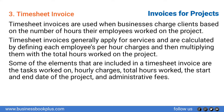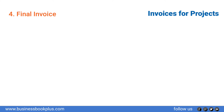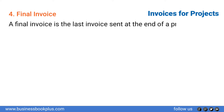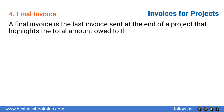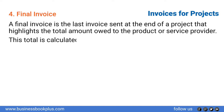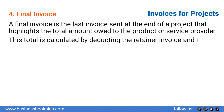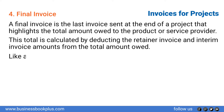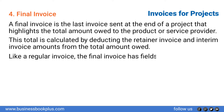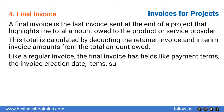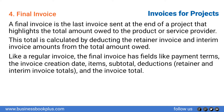Final invoice: a final invoice is the last invoice sent at the end of a project, highlighting the total amount owed for the product or service provided. This total is calculated by deducting the retainer invoice and interim invoice amounts from the total amount owed. Like a regular invoice, the final invoice includes fields such as payment terms, invoice creation date, items subtotal, reductions, retainer and interim invoice totals, and the invoice total.